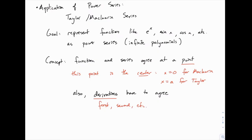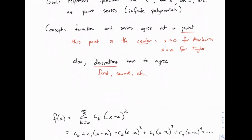So we're constructing this power series carefully using the rule that it has to agree with whatever function we're working with, and also the derivatives have to agree all the way up. The general form of a power series is c sub k — the coefficients of each term — times x minus a raised to the power of k. We already know that a is the center point, so in a given problem we'll be told where to set the center. Really the goal boils down to finding these coefficients, because a will be given to us and x is a variable. So for a Taylor or Maclaurin series, all we need is that coefficient c sub k.